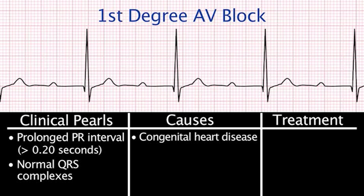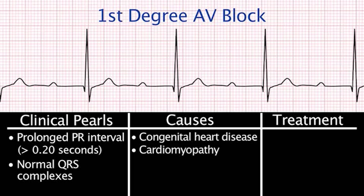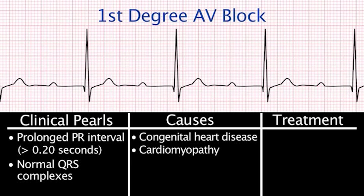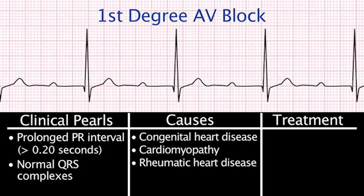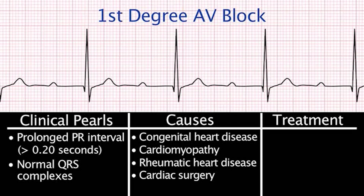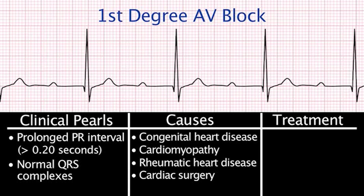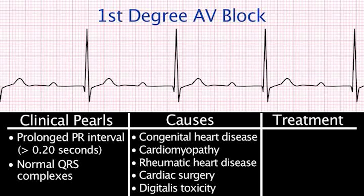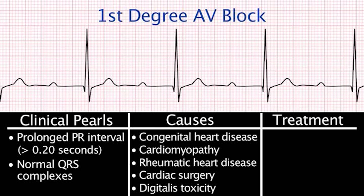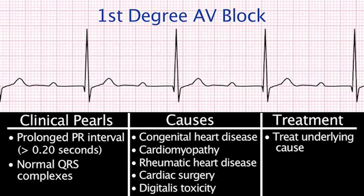Causes of first-degree AV block include congenital heart disease, cardiomyopathy, rheumatic heart disease, surgical intervention such as septal defect repairs, and digitalis toxicity. Treatment is not necessary except to address the underlying cause.